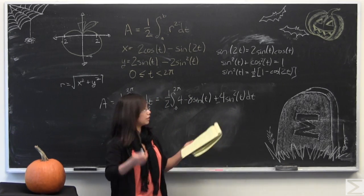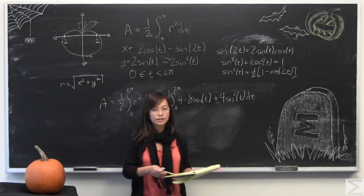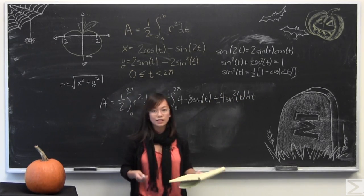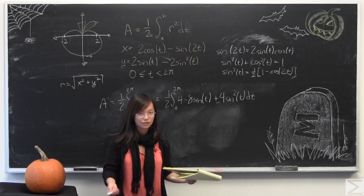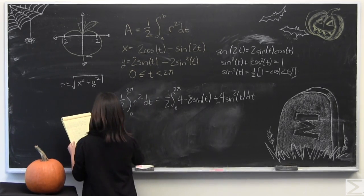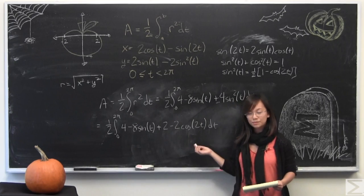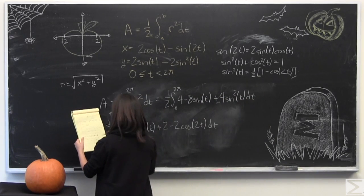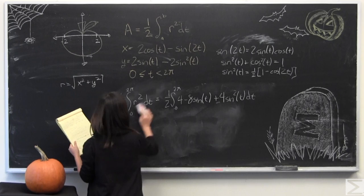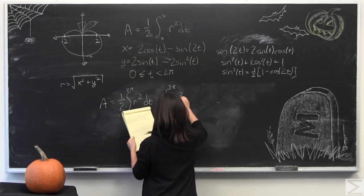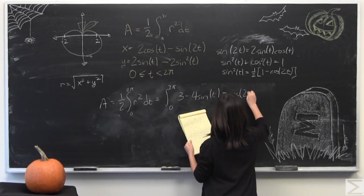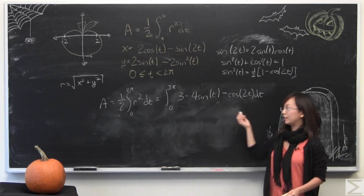That is what we had before and I'm going to use this third identity over here to dissolve this sine squared of t into terms that are much easier to integrate. So I'm going to group some terms together to make this a little easier to look at. This is very easy to integrate.